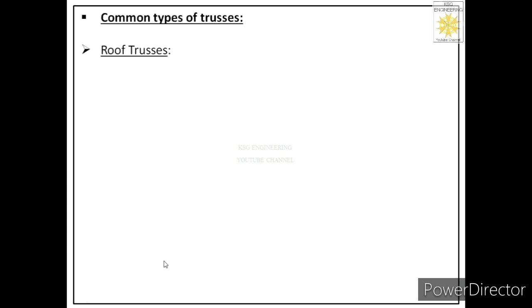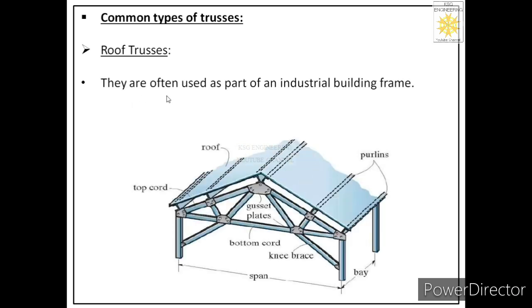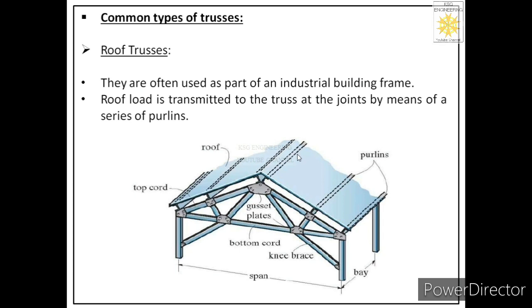Now we will see a few common types of trusses. First, roof trusses — they are often used as part of an industrial building frame. In roof trusses the load of the roof is transmitted to the truss by means of purlins, which are like beams. The load of the roof is transmitted to the truss at six different locations. These beams — called purlins — are placed on the joints of the truss, transmitting the roof load to the truss. Common types of roof trusses are scissors, Pratt, Howe, and fan truss.